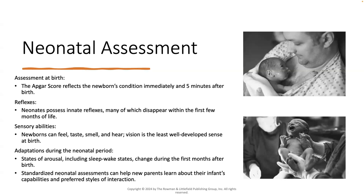The APGAR score stands for: A is Appearance — that's skin color and complexion; they're looking for yellowness, which is a sign of jaundice, or blue, which is a sign of oxygen deprivation. P is Pulse — they're looking at the baby's pulse. G is Grimace — the irritability reflex, checking if they respond to stimulation. A is Activity — muscle tone and movement, including flexion and extension. R is Respiration — they're looking at breathing, whether it's weak, irregular, strong, or absent.